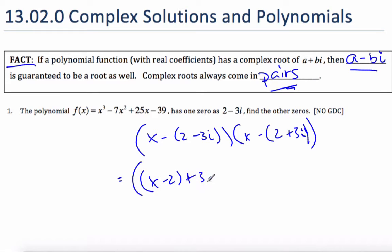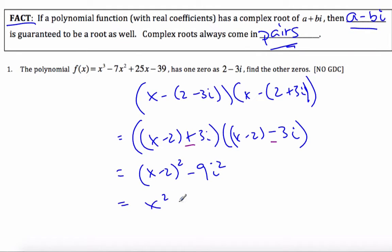So minus becomes plus 3i, and let me rewrite that bracket. This one becomes (x - 2) and it's going to be minus 3i. When I write it like this, please note that now it is a difference of squares scenario. The middle term cancels, so it ends up being (x - 2)² - 9i², which I know to be x² - 4x + 4 + 9.